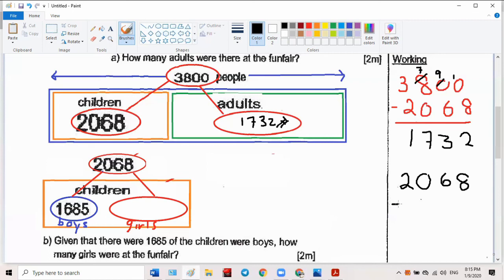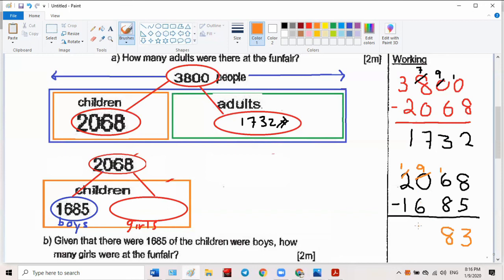2068 minus 1685. Show me how you do it. 8 minus 5 is 3. This 6 minus 8, not enough. You borrow from this guy, this guy borrow from this guy, become 1, then you become 9. Now you got 16. 16 minus 8 is 8. 9 minus 6 is 3.